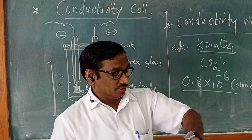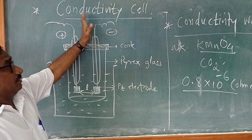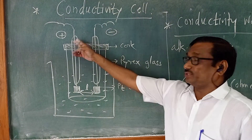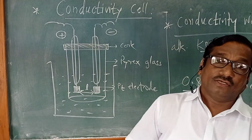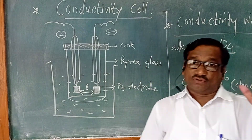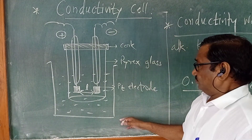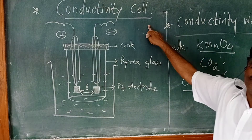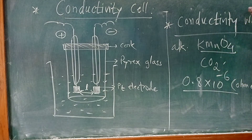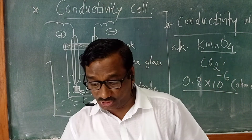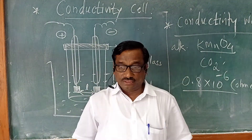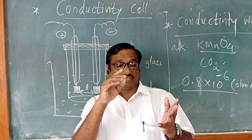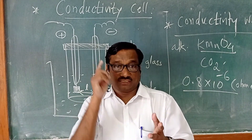This is about conductivity and the conductivity cell, which has two electrodes — positive and negative — connected to the conductometer, and conductivity water used for solution preparation. Thank you very much. Next time we will see the problems on all the definitions we have studied: specific resistance, specific conductance, and equivalent conductance.